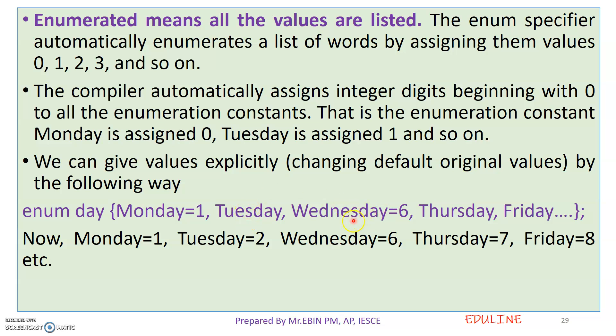If Wednesday is assigned 6, then Thursday will be 7, and so on — these are the numbers we have assigned. This is the enumerator data type.